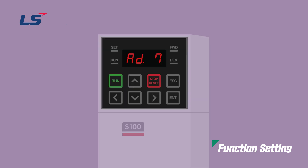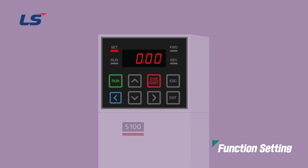Select DC start as number 1 in AD7 start mode. When DC start is set, DC start time in AD12 and DC injection level in AD13 are activated. At AD12 DC start time, press enter and use the arrow keys to set the time. The time setting can be set from 0 to 60 seconds depending on the condition of the equipment. At AD13 DC injection level, press the enter key to set the DC injection level. Use the arrow keys to set the level and press enter to complete the setting. The DC injection level can be set from 0 to 200% depending on the machine condition.